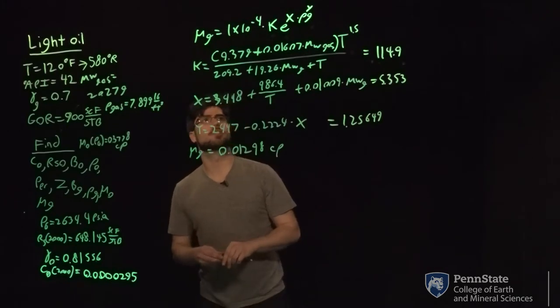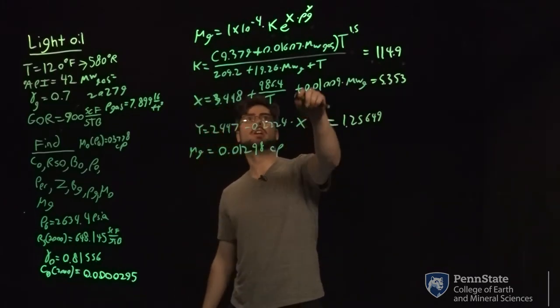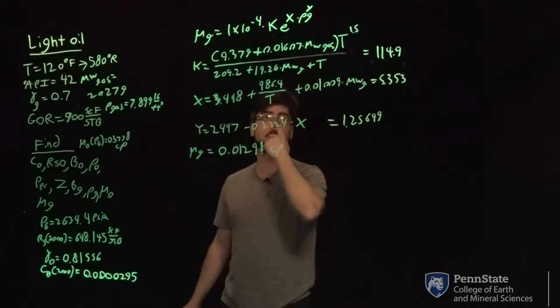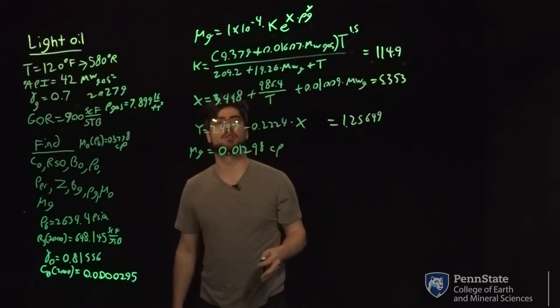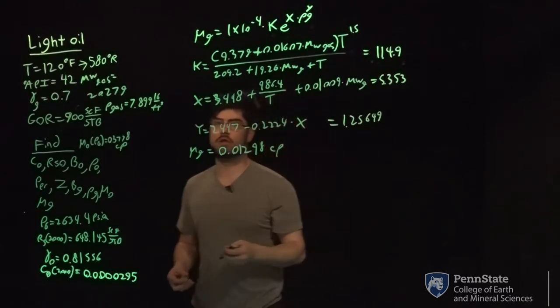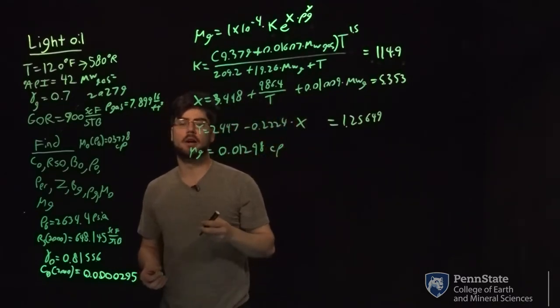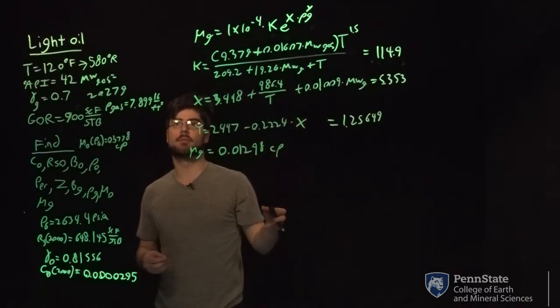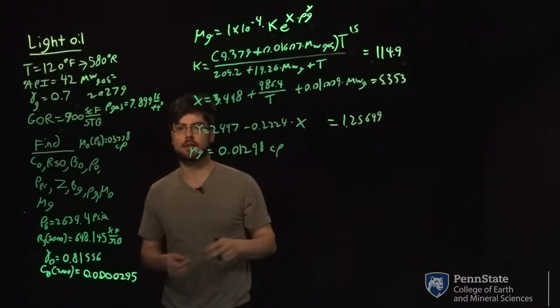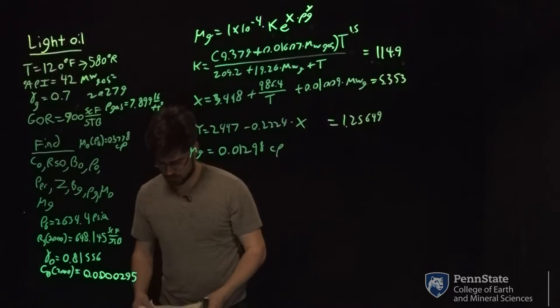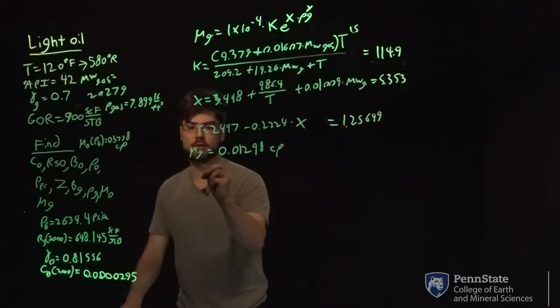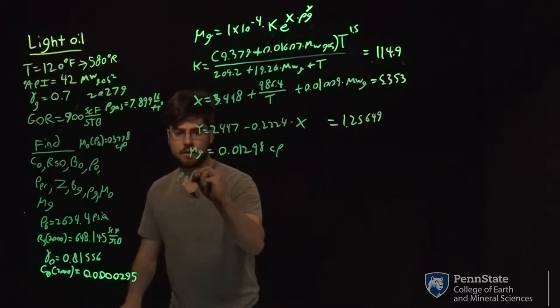It's important to note in this equation, which I may have said incorrectly earlier, this rho g needs to be in terms of gram per centimeter cubed. And it can't be in terms of pound per foot cubed or you're going to have very high values for viscosity. So to convert from pound per foot cubed to grams per cc, it's in the notes. The equation we'll be using is rho g in terms of gram per cc.